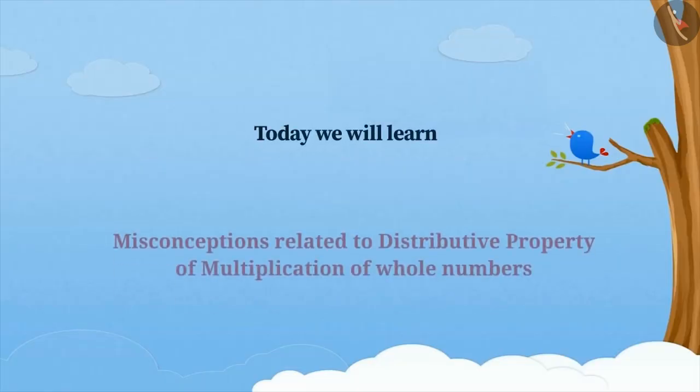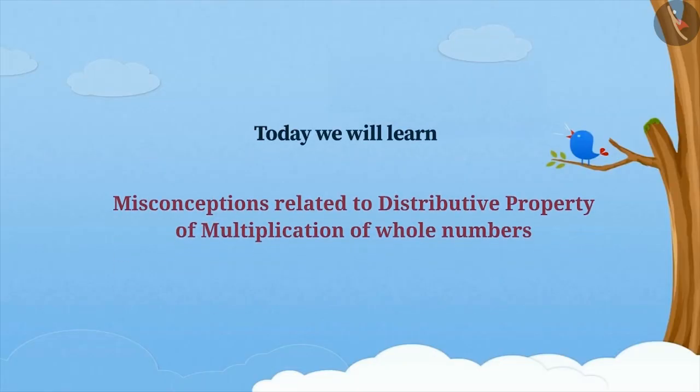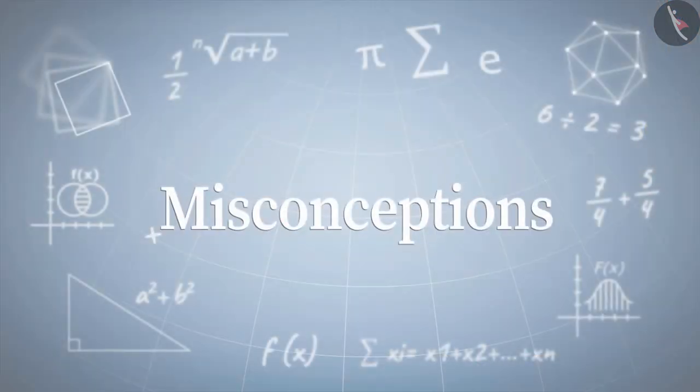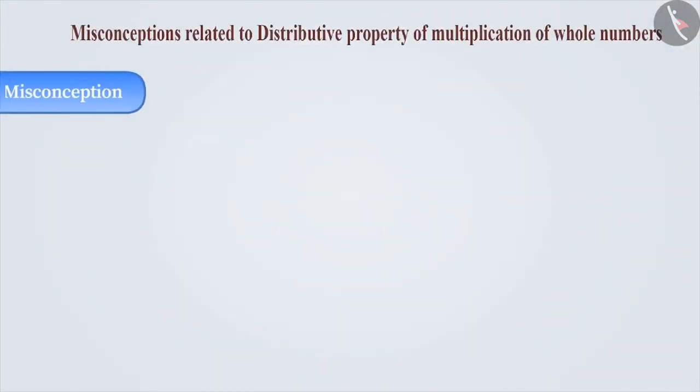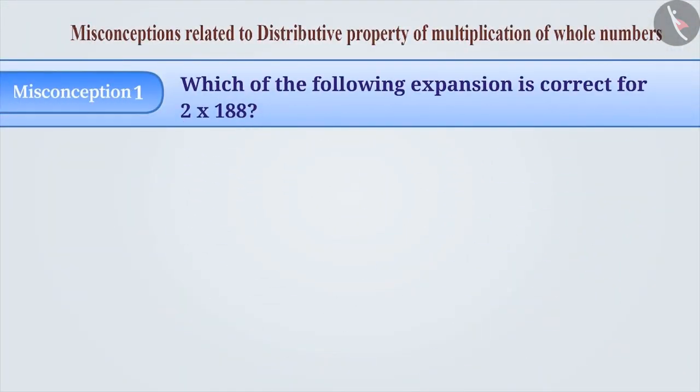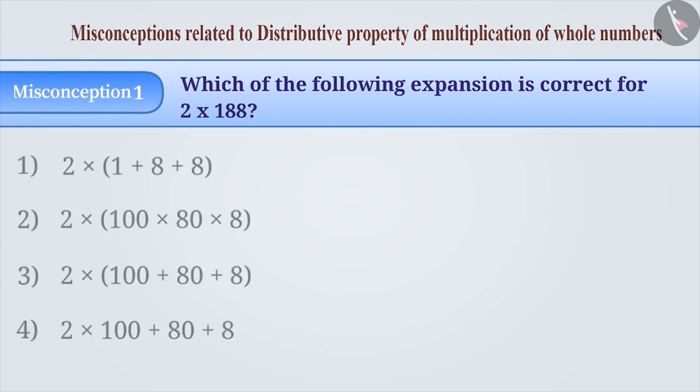Today, we will see some misconceptions related to distributive property of multiplication of whole numbers. Misconception 1: Which of the following expansion is correct for 2 × 188?